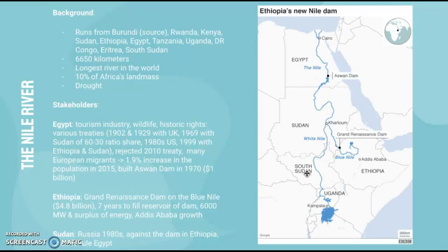Egypt has a large tourism industry which means they need the water supply — for energy, such as from their Aswan Dam, for agriculture, wildlife protection, and food sources. They also have historical rights, having made various treaties over the past 100 years or so.